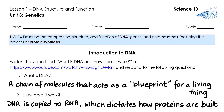In the video, they described DNA as a molecular blueprint — a chain of molecules that acts as a blueprint for a living thing. And how does it work? We saw that DNA is copied into a different type of molecule called RNA, which carries the instructions for how proteins are to be built. We're going to be looking at all of these concepts in detail in today's lesson.